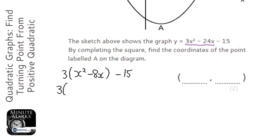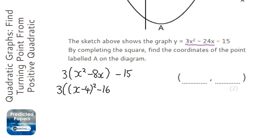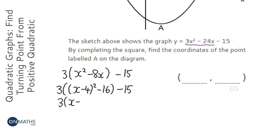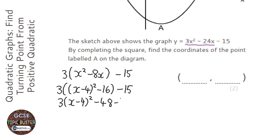Now I'm going to complete the square within the brackets. We've got x minus 4, all squared, and that creates a 16 which we don't want, so minus 16, and then minus 15. Now remove that minus 16 from it, so we're going to end up with 3(x minus 4) squared, and then 3 times minus 16, which is minus 48, minus 15.